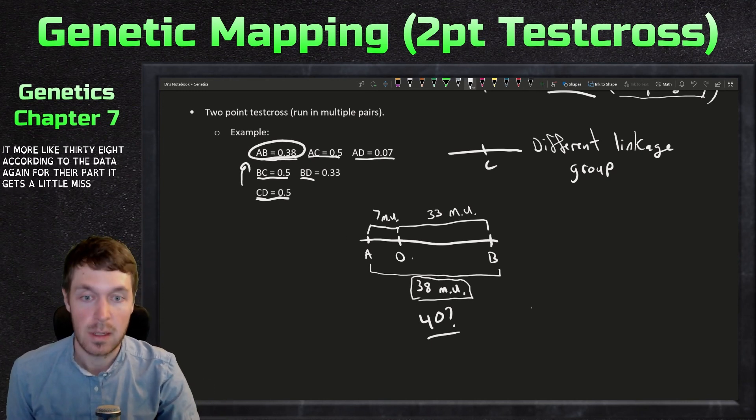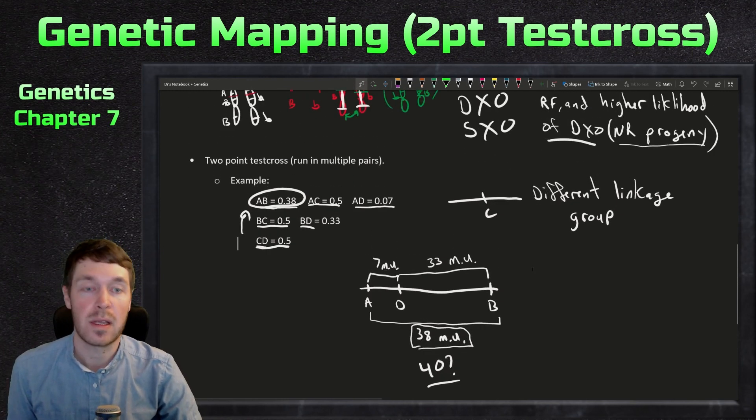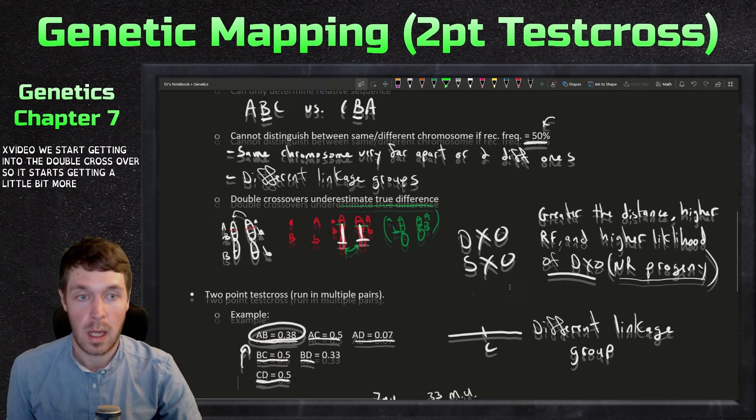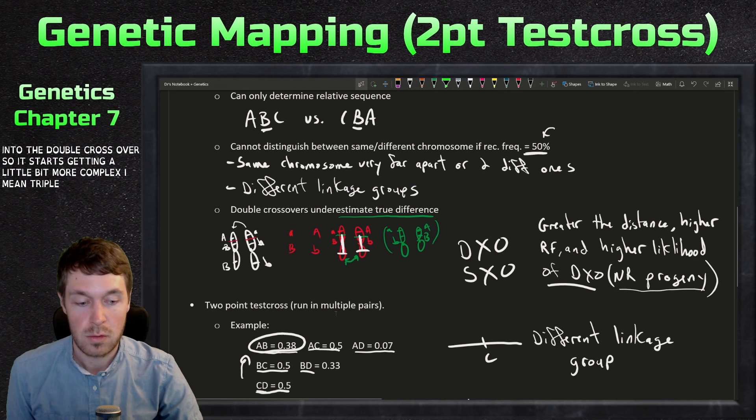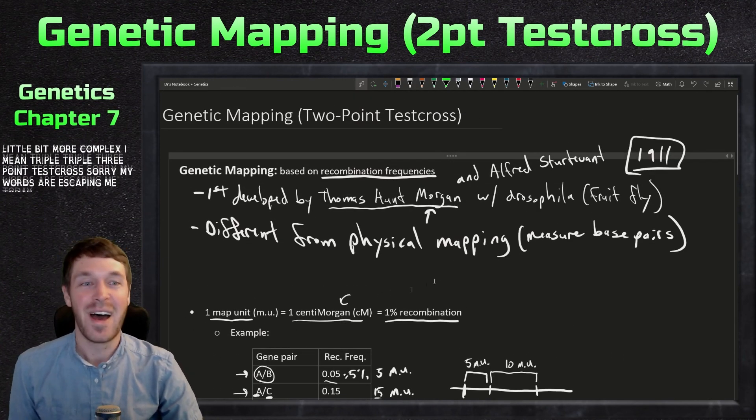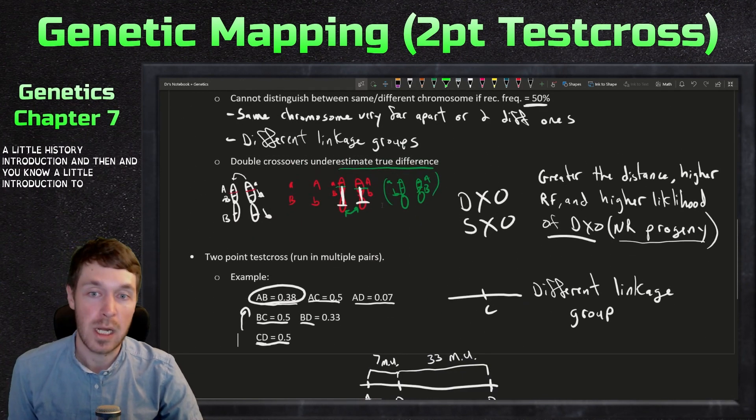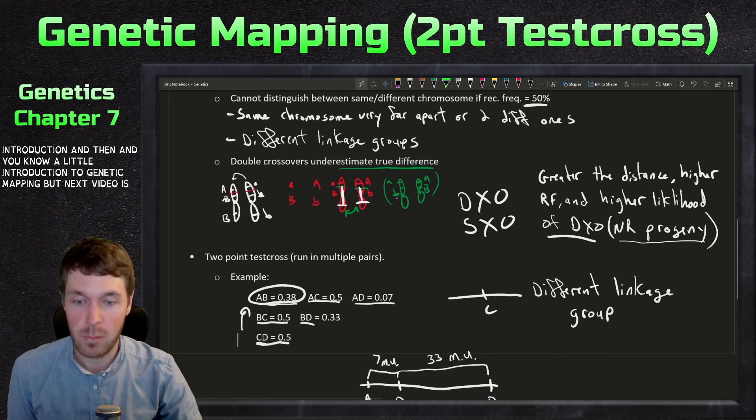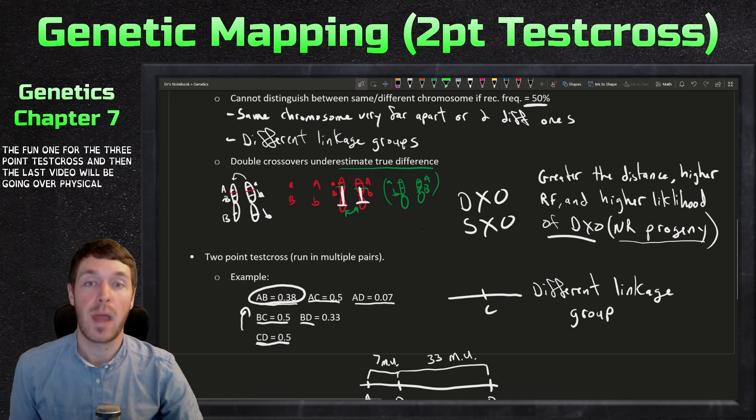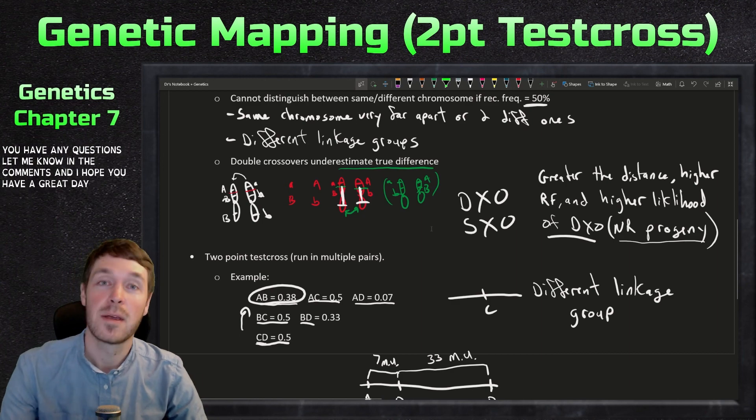So again, the next part gets a little messier. But yeah, that kind of sums up what I wanted to go over today. So next video, we start getting into the three point testcross. So it starts getting a little bit more complex. But yes, today was a little history introduction and a little introduction to genetic mapping. But next video is the fun one for the three point testcross. And then the last video will be going over physical mapping. All right, so I have for today, if you have any questions, let me know in the comments. And I hope you have a great day. Bye bye.